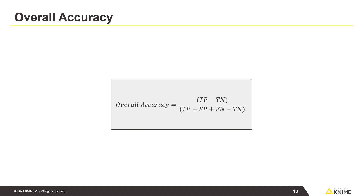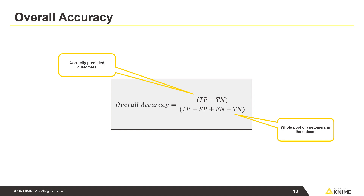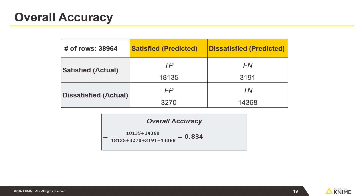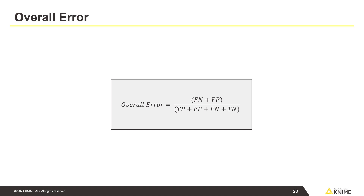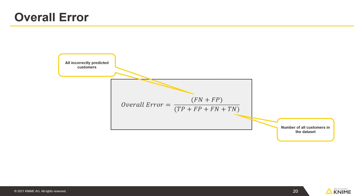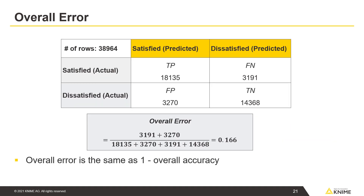Overall accuracy is calculated with this formula. Overall accuracy is the ratio of all correctly predicted customers to the number of all customers in the dataset. Overall error is calculated with this formula. Overall error is the same as 1 minus overall accuracy.